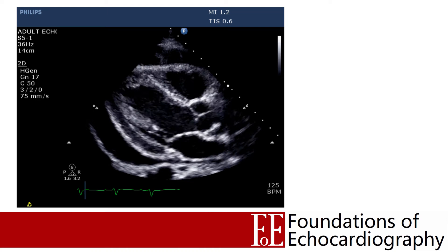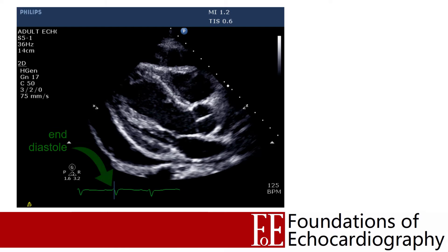As sonographers we need to be able to describe the effusion and communicate findings with others. When measuring the diameter of a pericardial effusion, we always measure at end diastole — the point in the cardiac cycle when the heart is most full and the effusion has its smallest diameter. Rather than a single measurement location, it's advisable to measure at multiple locations to help the reader understand the size and distribution of the fluid, ideally from standard views to allow comparison over time.